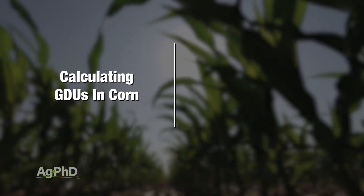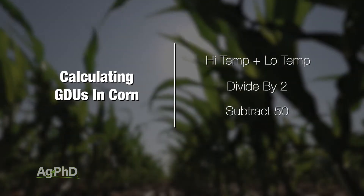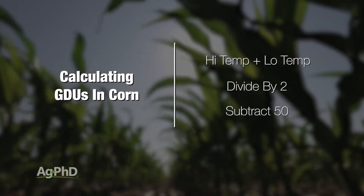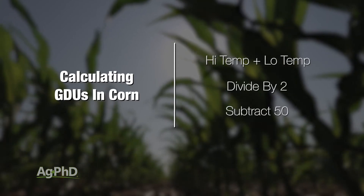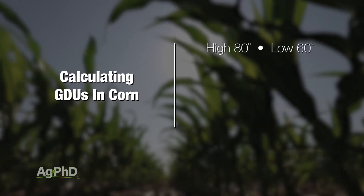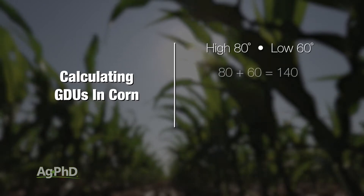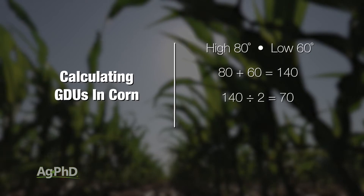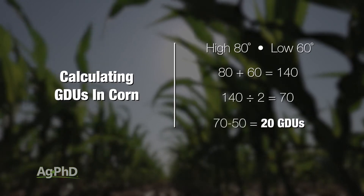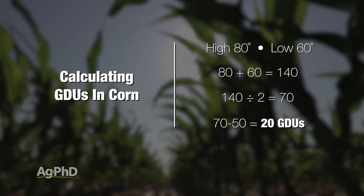Using a base of 50, you just take the high temperature plus the low temperature, divide by 2, and subtract 50 — and you'll see how many GDUs you've got. For example, if you had a high of 80 degrees and a low of 60 degrees: 80 plus 60 equals 140, divide by 2 gives you 70, and then 70 minus your base of 50 leaves you 20 GDUs for that particular day.